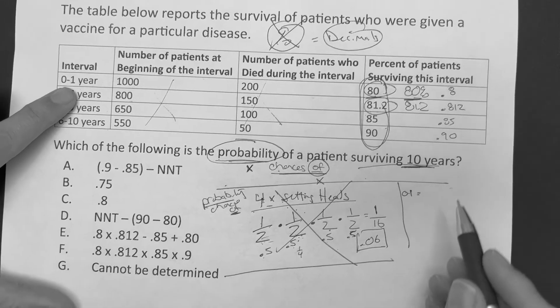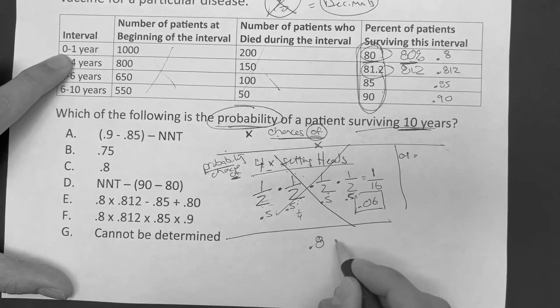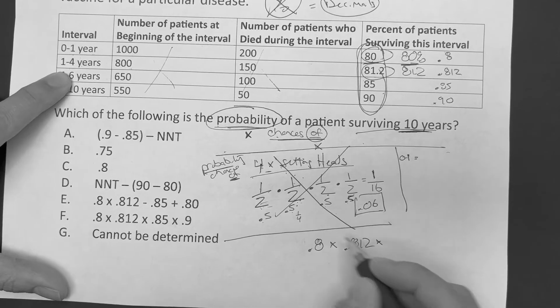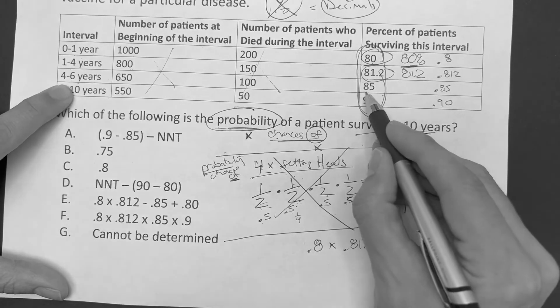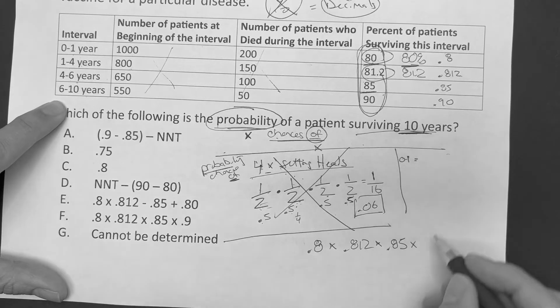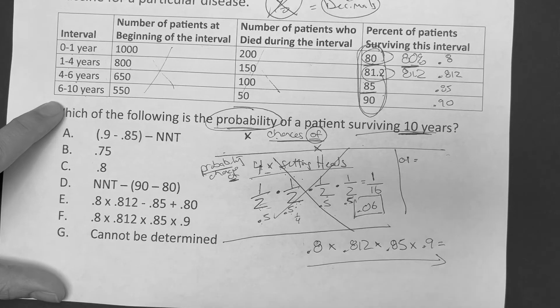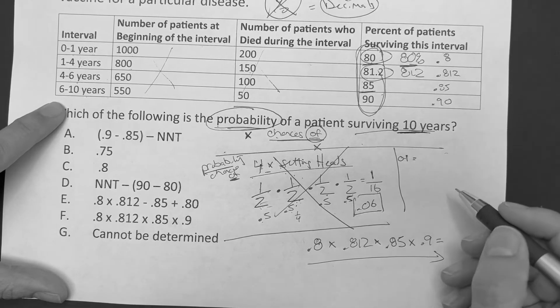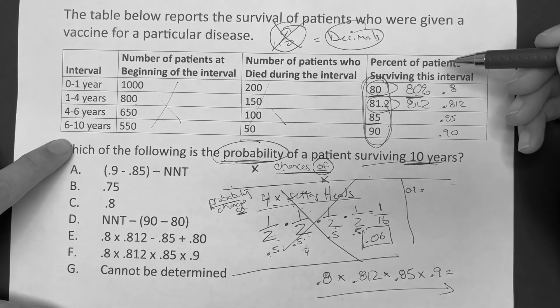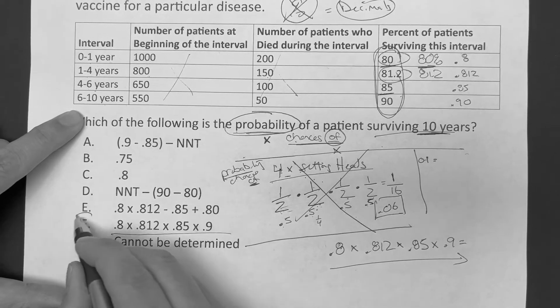We're going back to this question again. It says between 0 and 1, it's 0.8. What about the second interval, between 1 and 4 years? It's 0.812. And the third, between 4 and 6, 85% which is 0.85. Between 6 and 10, it's 0.9. Could they make you work this out? They could. Absolutely. You've got to calculate it, but I don't see them doing that. I think they just want to make sure you know some basic math principles. If you go through all these answer choices, it's going to be this one right here. Answer choice F.